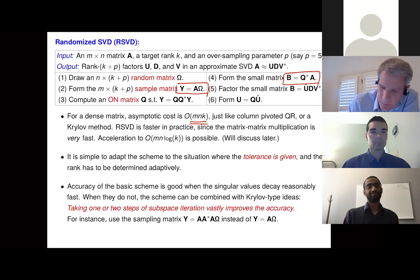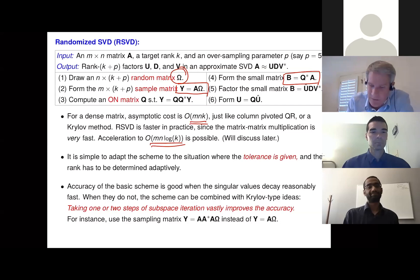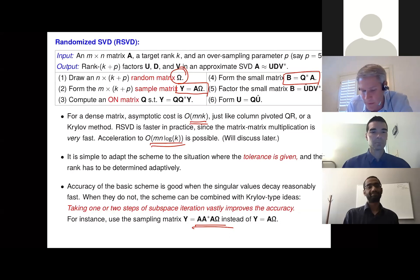In much of the talk I frame things as if the rank is given in advance, but you can modify the algorithms to handle the realistic situation where you're given a tolerance and must determine the rank yourself. When singular values decay rapidly, the basic randomized SVD works very well. When they decay slowly, it works less well, and you need to incorporate powering — running the algorithm on a power of A — moving toward traditional subspace iteration or Krylov methods.